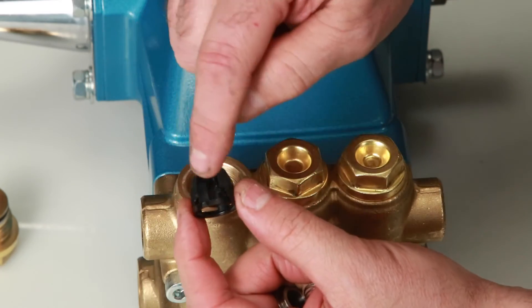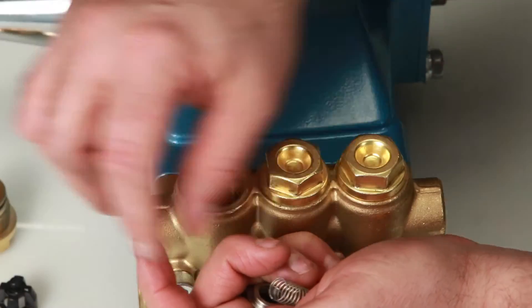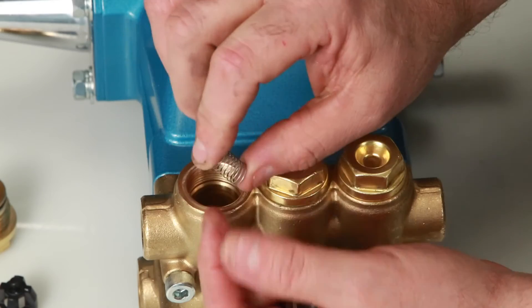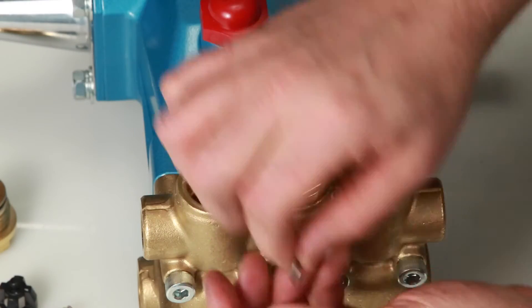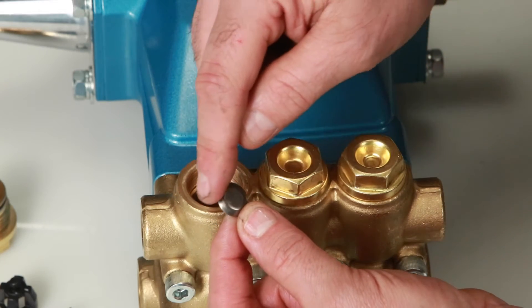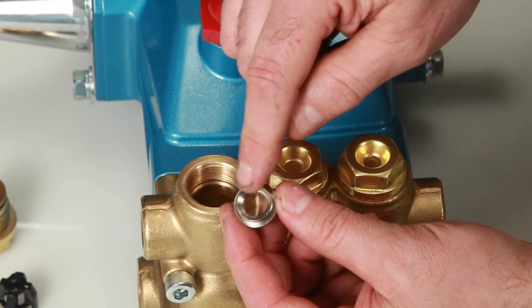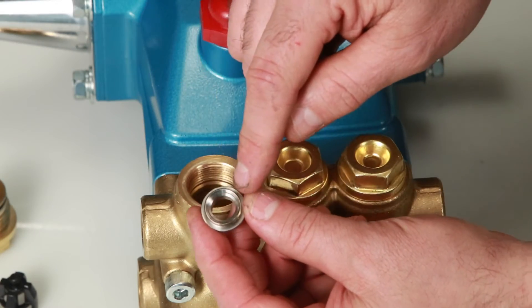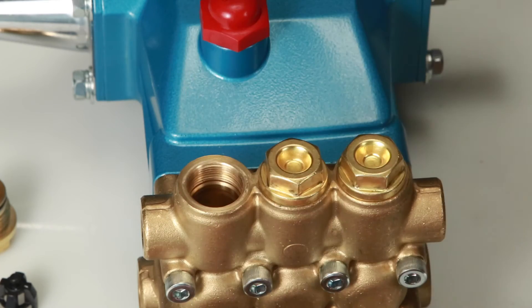Next, inspect spring retainer for cracks, excessive wear, or damage. Inspect spring for proper tension or any damage. Inspect tapered surface of the valve for wear, pitting, or damage. Inspect tapered surface of valve seat for wear, pitting, or damage. Pitting on the valve seat or valve is an indication of cavitation.